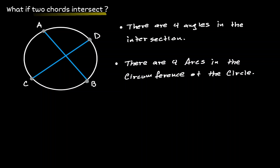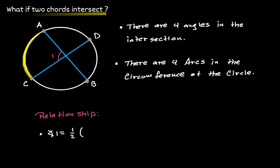There exists a relationship between those angles and those arcs. If we consider one of the created angles — the angle on the left — angle 1 is going to be equal to half of the sum of the opposite arcs. In this case, what is opposite of angle 1 is arc AC and arc BD.